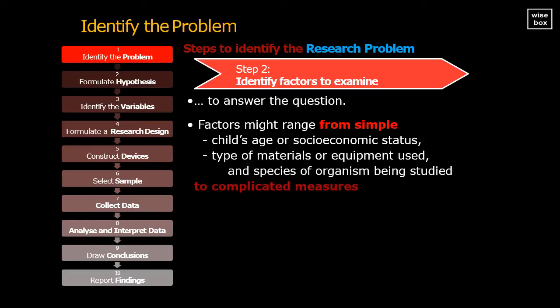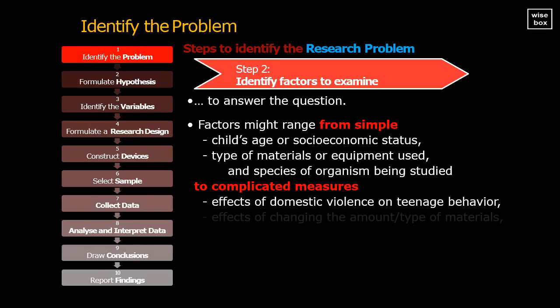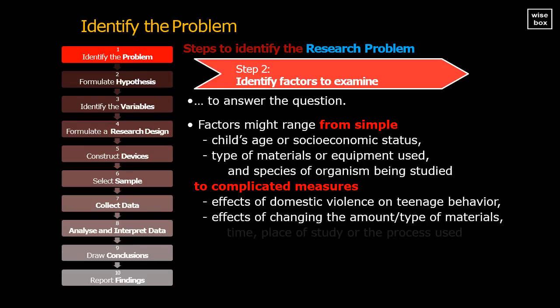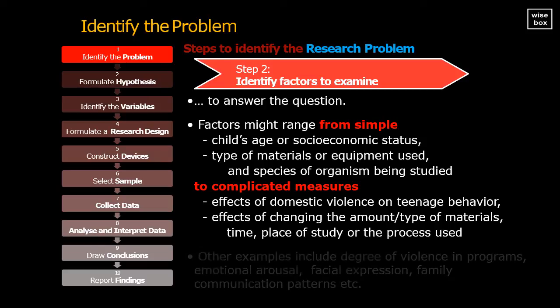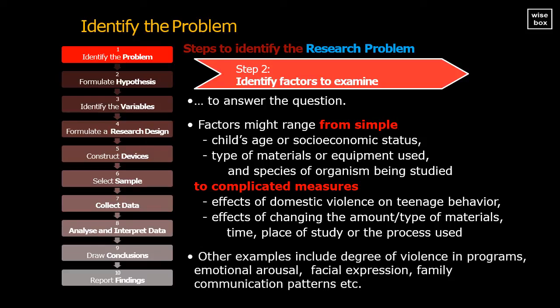Or to complicated measures, like the effects of domestic violence on teenage behavior, or effects of changing the amount, or type of materials, time, place of study, or the process used. Other examples include degree of violence in programs, emotional arousal, facial expression, or family communication patterns.